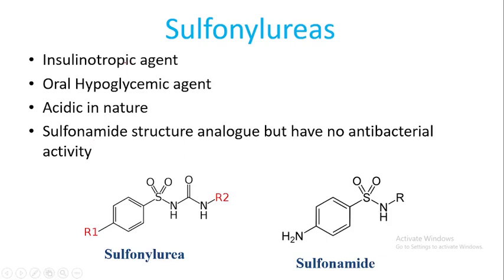Sulfonyl ureas are insulinotropic agents. That means they induce the secretion of insulin from the pancreatic beta cell. They are oral hypoglycemic agents. Sulfonyl urea is very important in relation to blood glucose levels and insulin secretion.